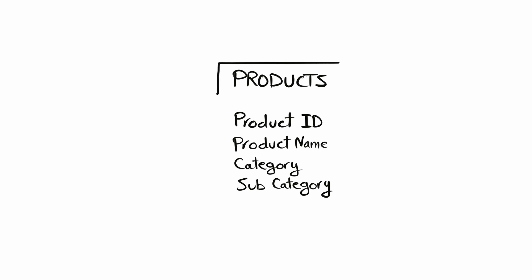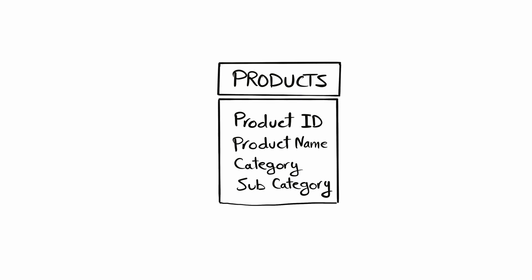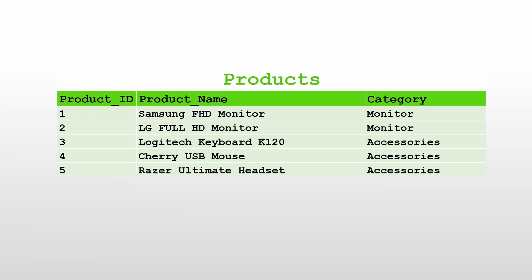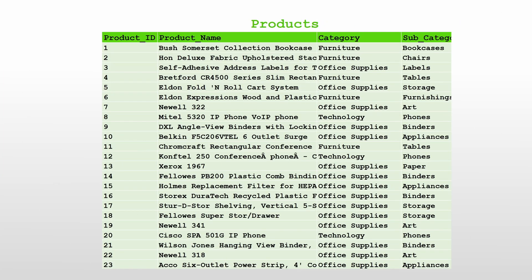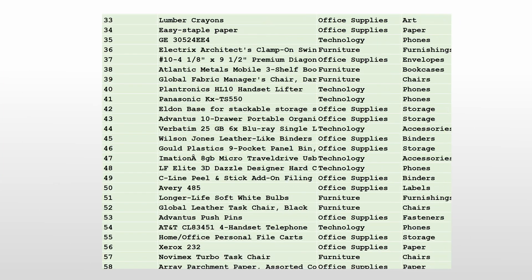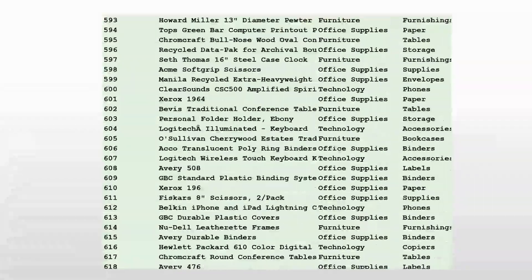The third table in our data model is the Products table. It contains all the products found inside our superstore, with information like the product name, category, and subcategory. In the small dataset we have only five products in the Monitor and Accessories categories, but in the big dataset we have more than 2,000 products with various categories and subcategories.